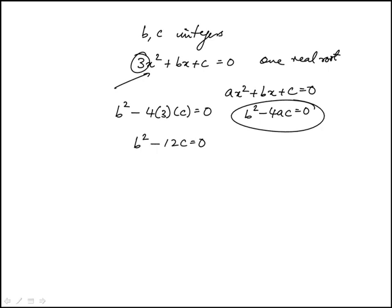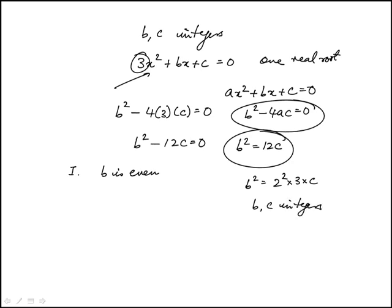I need to examine these statements one by one. The first one is b is even. If you look at b², and so the 12 is 2² times 3 times c, and we're told that b and c are integers. Since b is an integer, once we take the square root, we'll have a 2 in it, which means it will always be even. So yes, statement I is true.